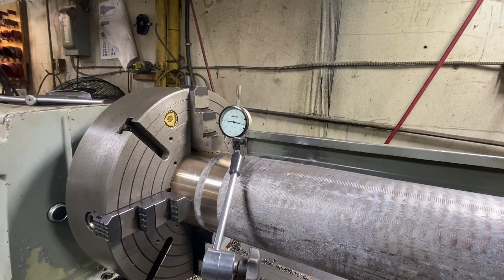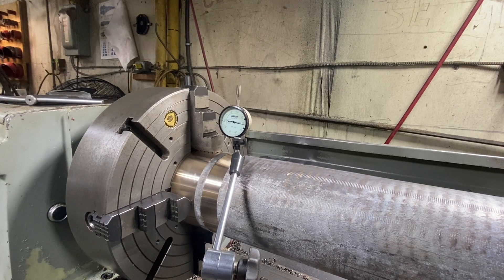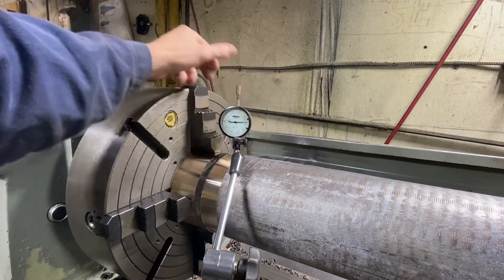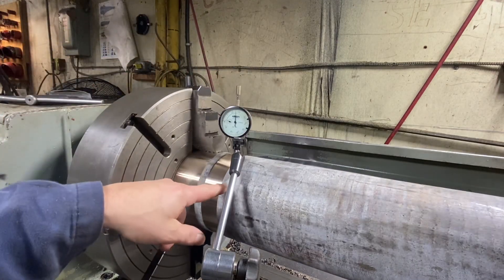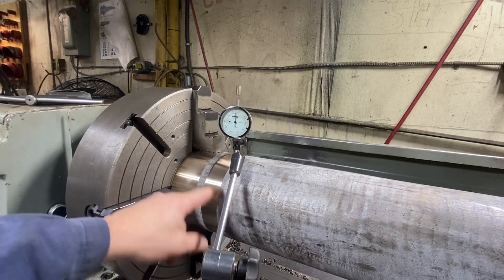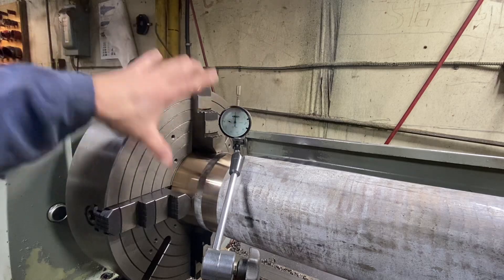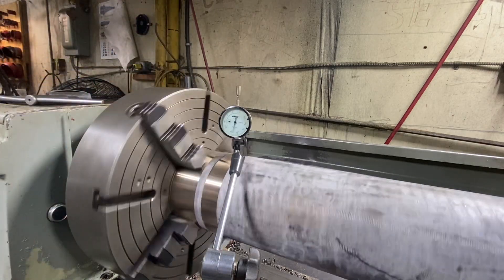All right, so we've got the camera—or in this case an iPhone—in one of these knockoff Noga bases, and we've re-chucked the part. Here's our situation: we were originally chucked onto an unturned surface, and now we're chucking onto a turned surface. Of course, when we loosen the chuck jaws off and tighten them back up again, we get runout. No big deal.